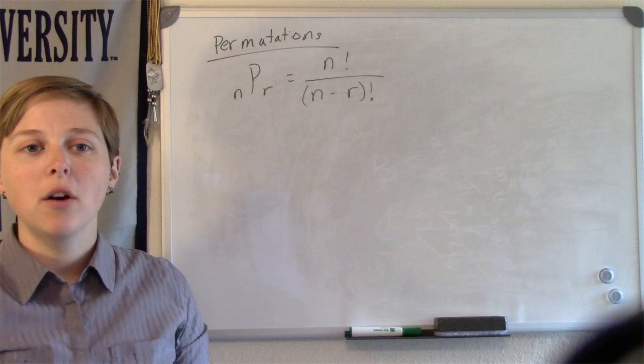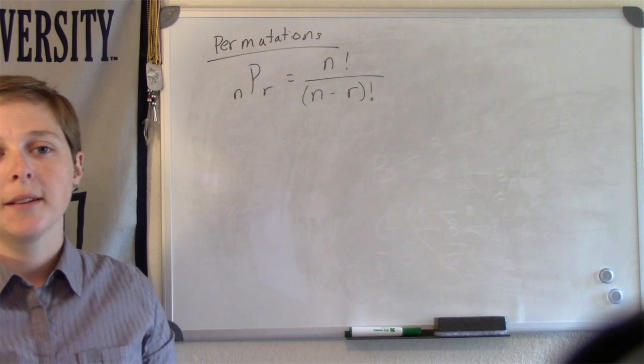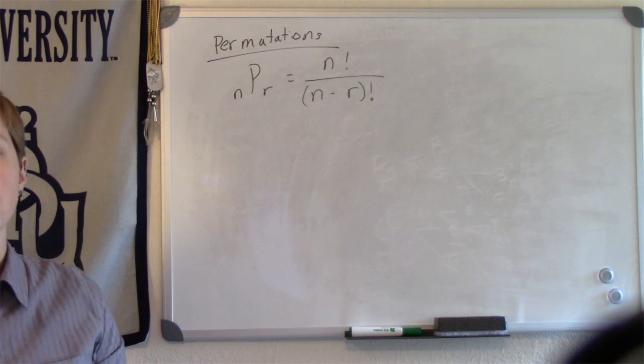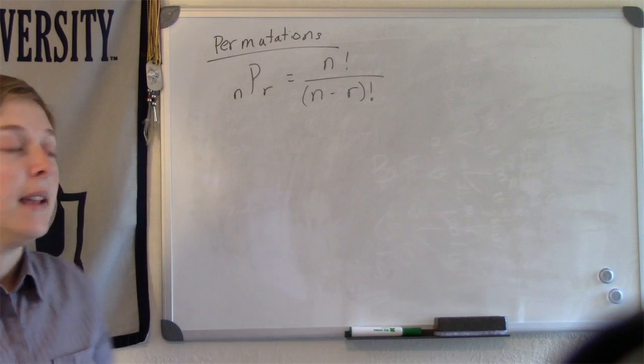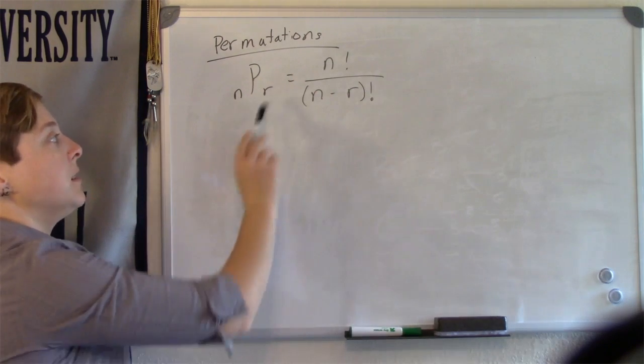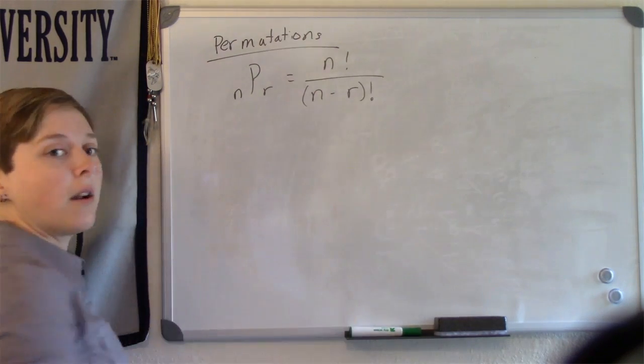Hello. In this video I want to discuss permutations. The number of permutations of n distinct objects taken r at a time is n factorial divided by n minus r factorial.